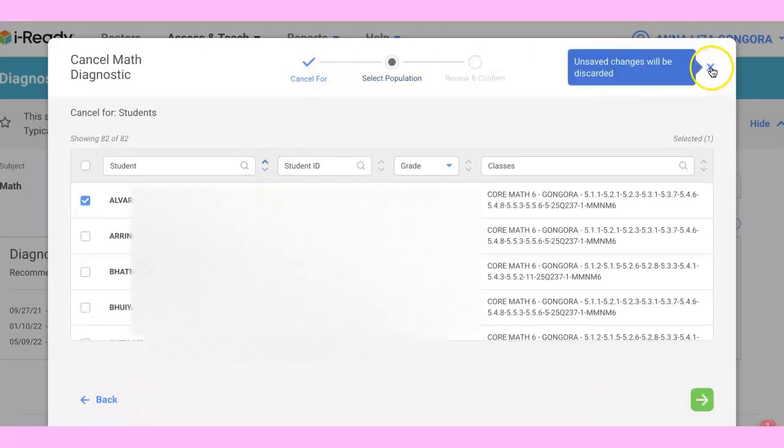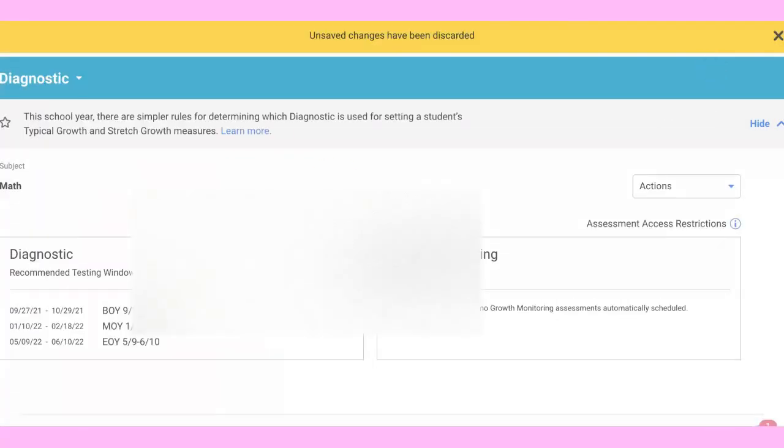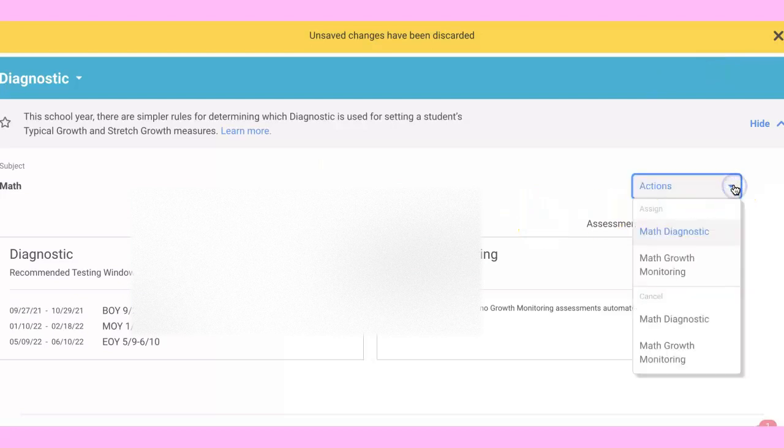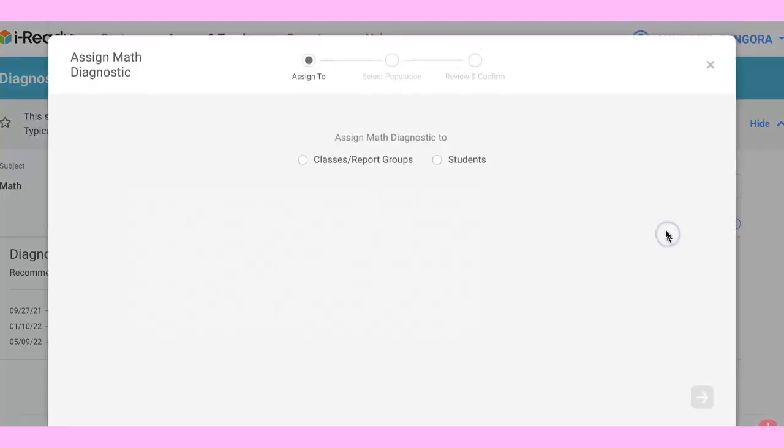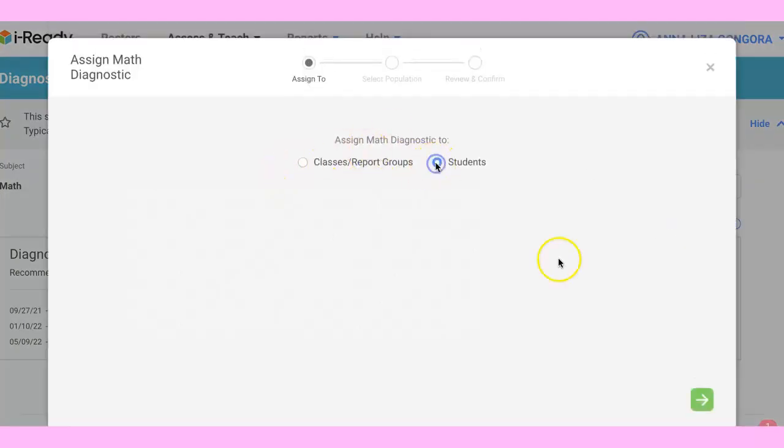If you want to reassign it, assume they already canceled. Go back to Action and select assign. You want to assign a Math Diagnostic to just one student.